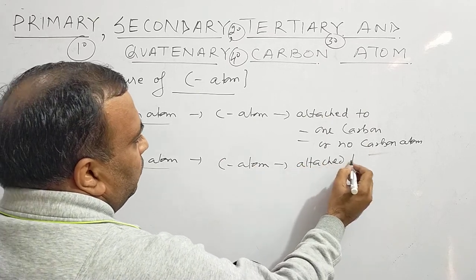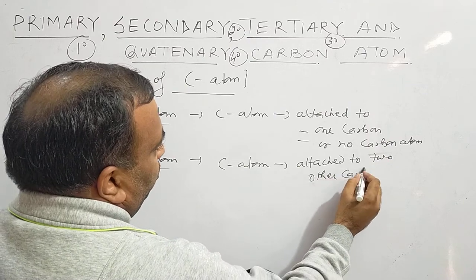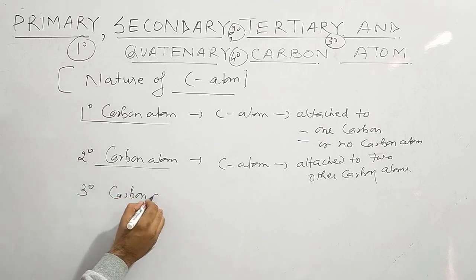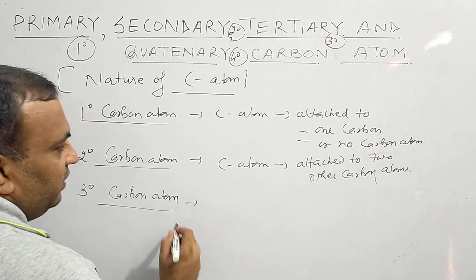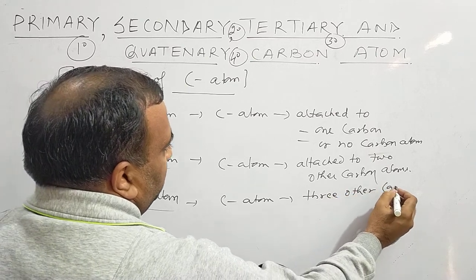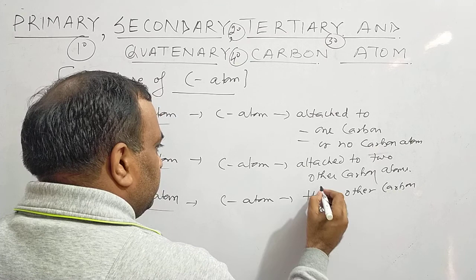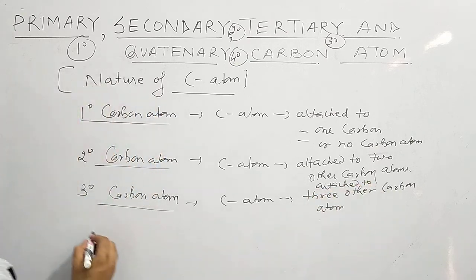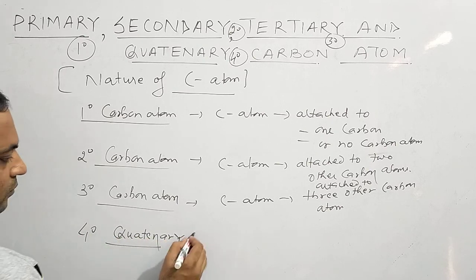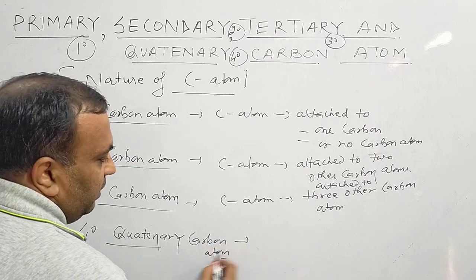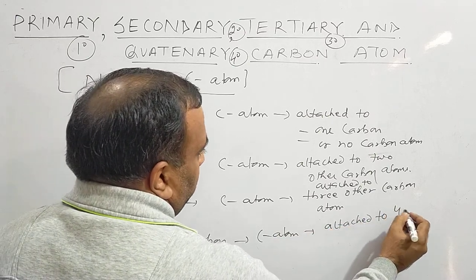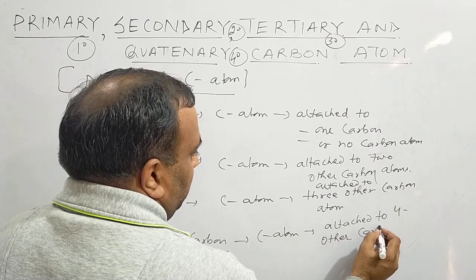A secondary carbon atom is a carbon atom that is attached to two other carbon atoms. A tertiary, or 3° carbon atom, is attached to three other carbon atoms. A quaternary, or 4° carbon atom, is attached to four other carbon atoms.